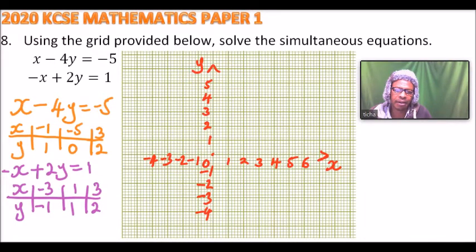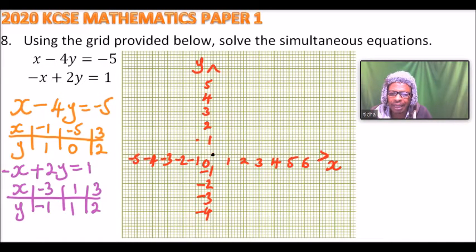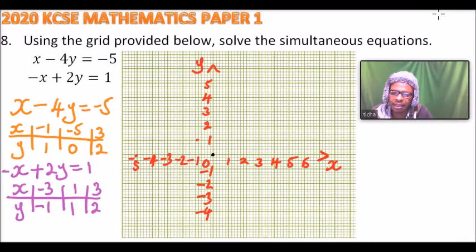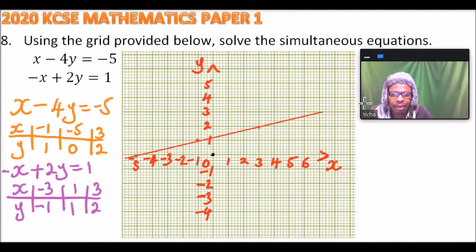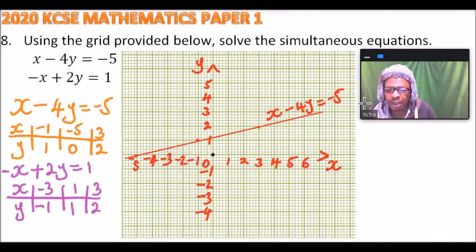We plot the first equation. When x is minus 1, y is 1 — we mark that point. When x is minus 5, y is 0 — we mark that point. When x is 3, y is 2 — we mark that point. We join the three points to form a straight line, and label it: x minus 4y equals minus 5.